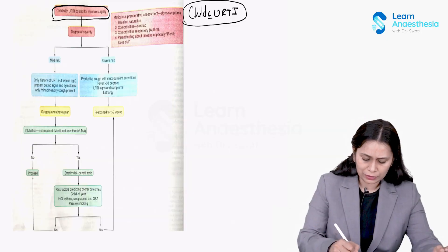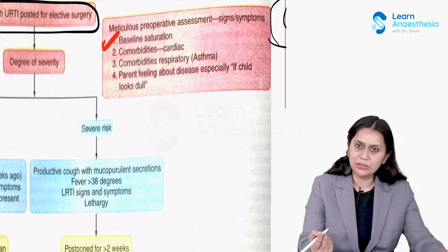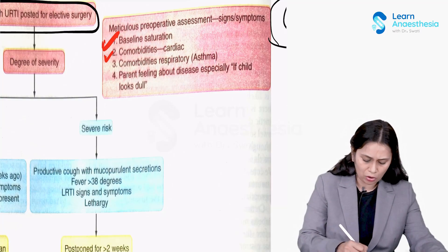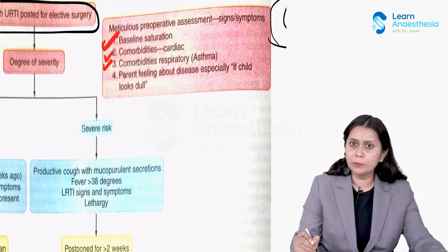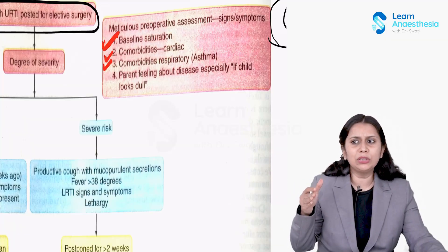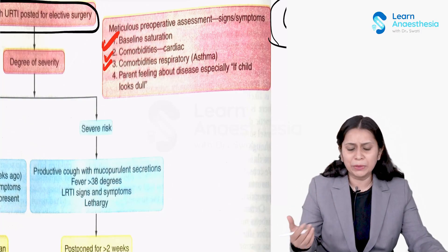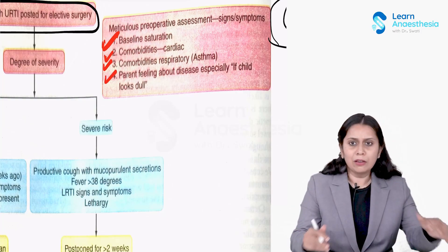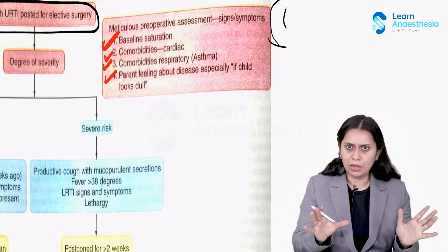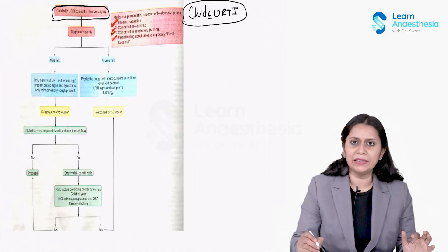We should focus on baseline saturation. We should assess comorbidities — whether the child has any cardiac or respiratory comorbidity like asthma. We should ask the parents about any recent change in behavior: has the child become less playful or more sleepy? These four things in history will help us in deciding the severity.